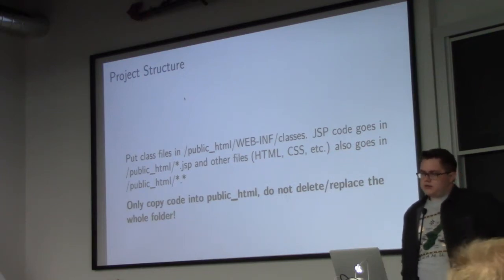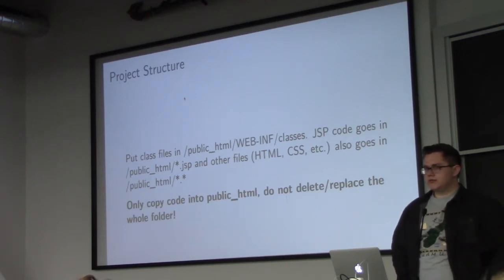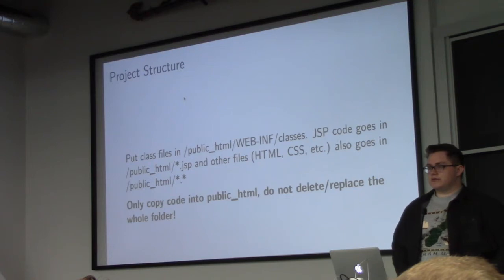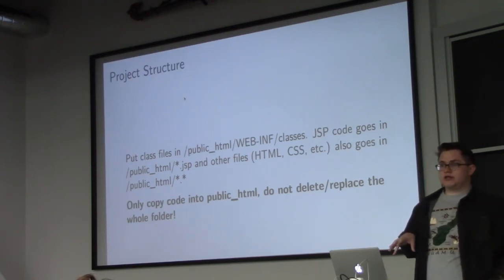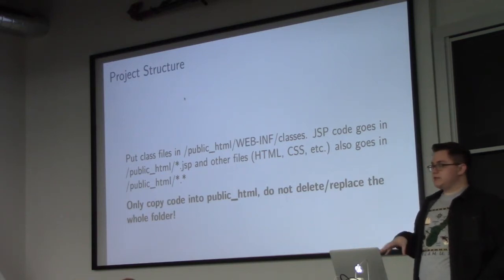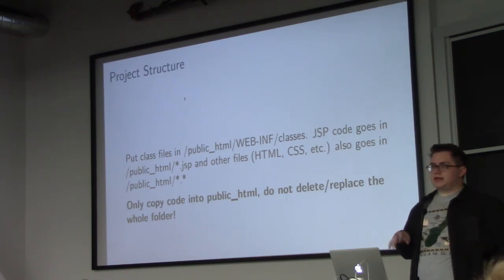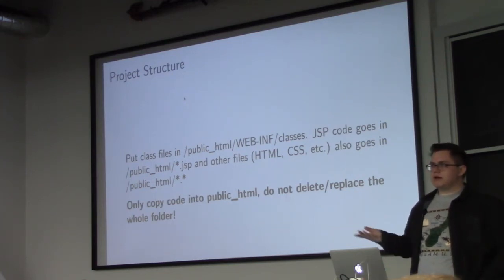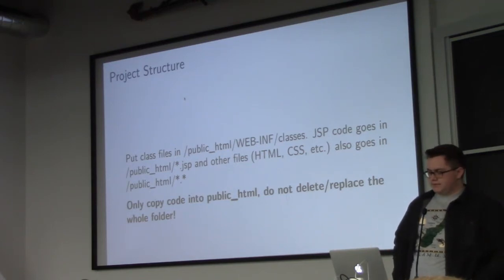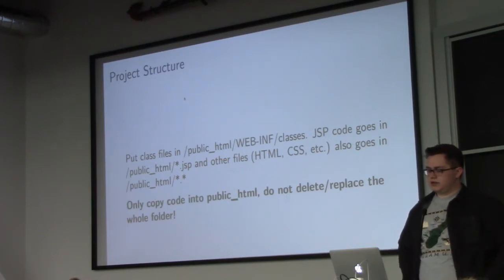For the project structure, each of you will have a login on the Georgia server, using the same username and password as your databases. In there, you'll find a public_html folder, and that's where you're going to be doing all your coding. Directly in that public_html folder, you can put all your JSP files. When someone goes to the URL, they just put an index.jsp file in there and that's the one loaded by default. From there, you can provide relative links throughout. That's where you put your JSP, HTML, CSS, and JavaScript files.